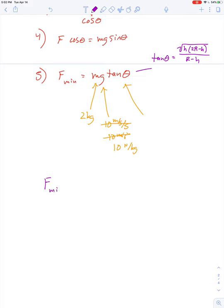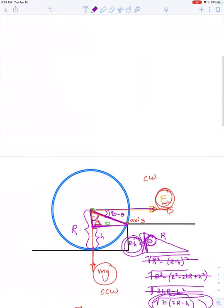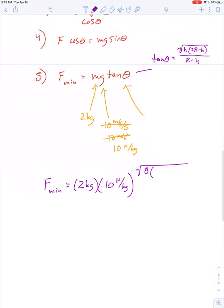So let's plug in and see what we get. In our example, the minimum required force would be 2 kilograms times 10 newtons per kilogram times the square root of, I think we have, I think we agreed that H is 8 centimeters. R was, did we say, 40 centimeters. So we need to do 2R, that would be 80 minus H, so minus 8 divided by R minus H, 40 minus 8.